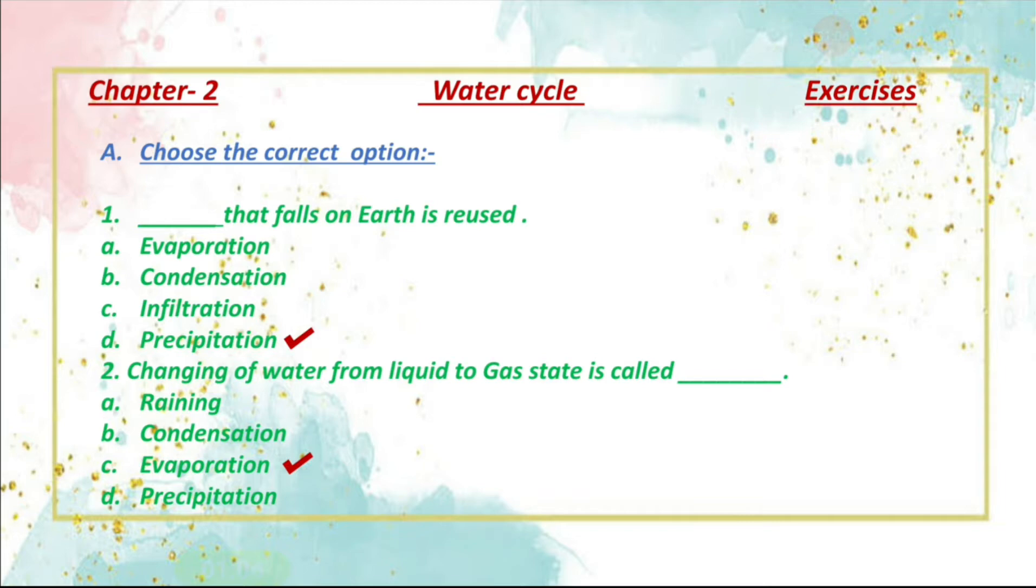You have to do the same in your copy also. Second, changing of water from liquid to gas state is called dash. Options are A. Raining, B. Condensation, C. Evaporation and D. Precipitation. So correct option is evaporation. Changing of water from liquid to gas state is called evaporation. So let's do our next exercise.